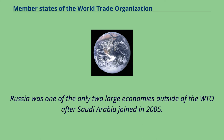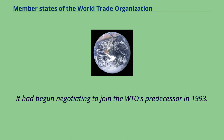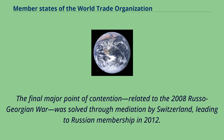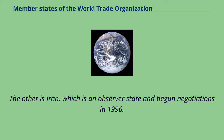Russia was one of only two large economies outside of the WTO after Saudi Arabia joined in 2005. It had begun negotiating to join the WTO's predecessor in 1993. The final major point of contention, related to the 2008 Russo-Georgian War, was solved through mediation by Switzerland, leading to Russian membership in 2012. The other large economy outside the WTO is Iran, which is an observer state and began negotiations in 1996.